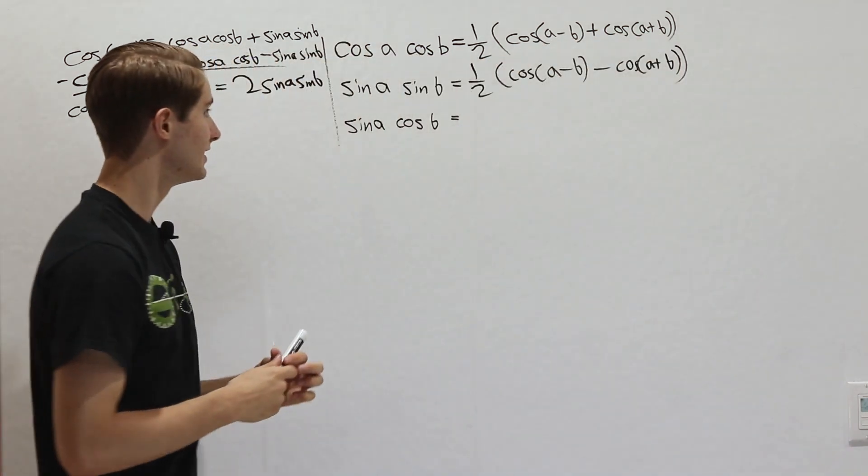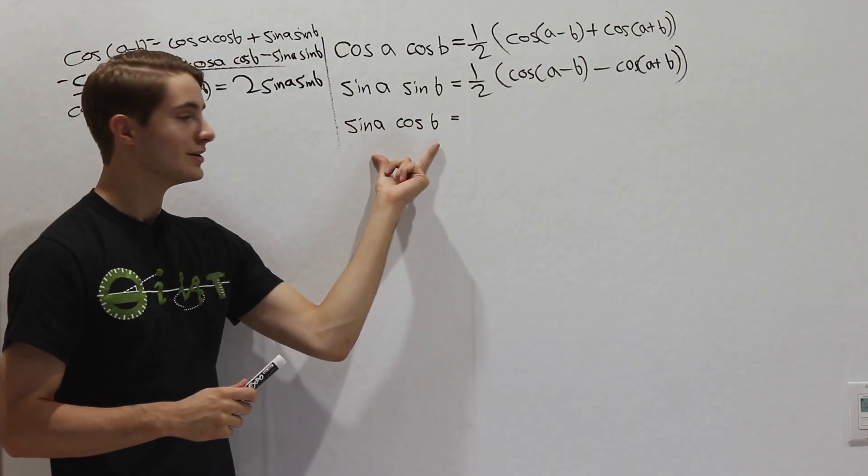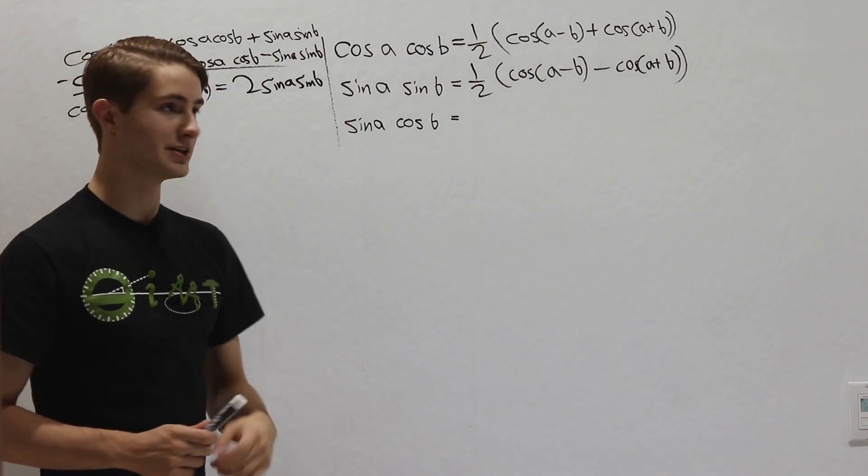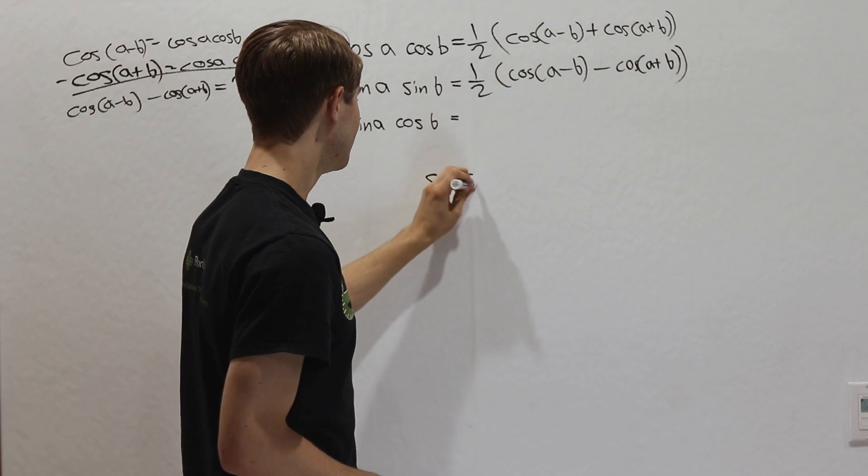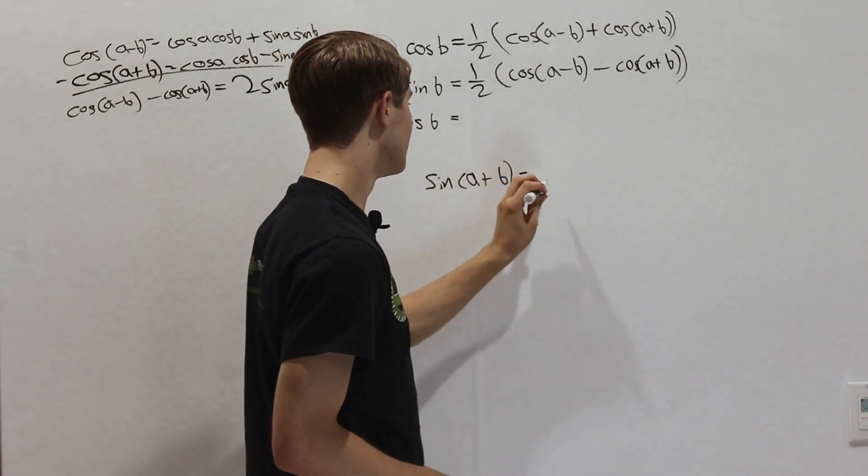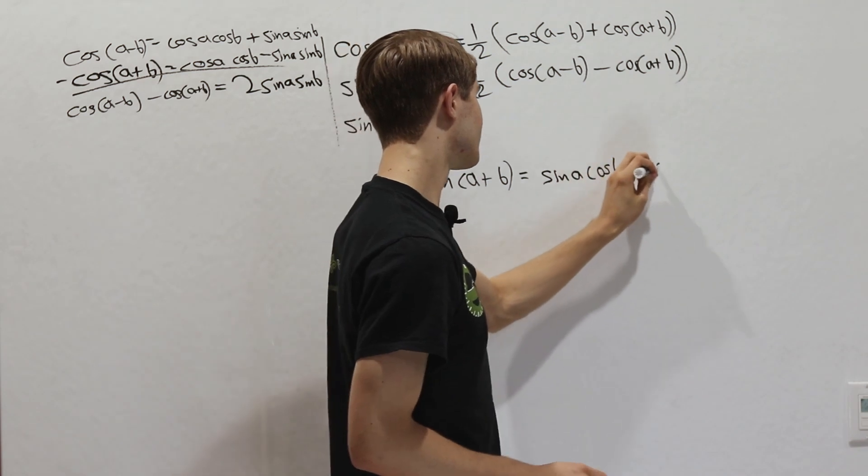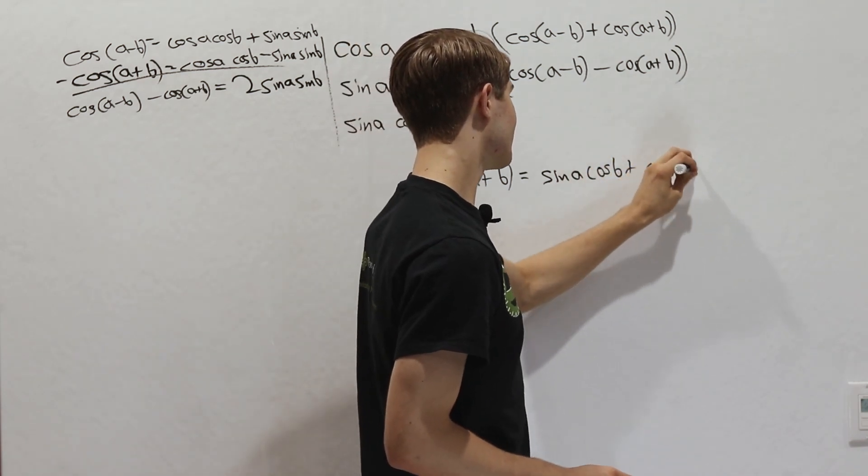So the last one we want to do right here is sine a cosine b. And in order to do that, we'll need the angle sum formula for sine. So if we take a look at the sine of a plus b, well that's going to be sine a cosine b plus cosine a sine b.